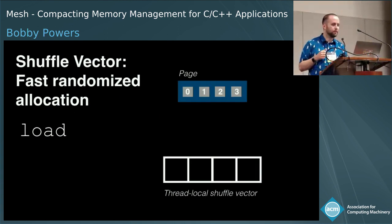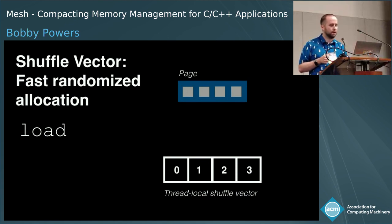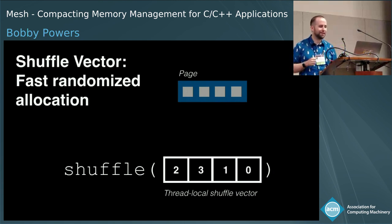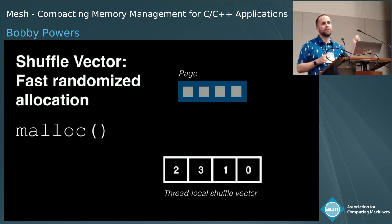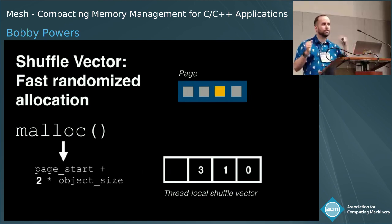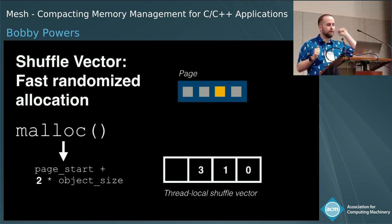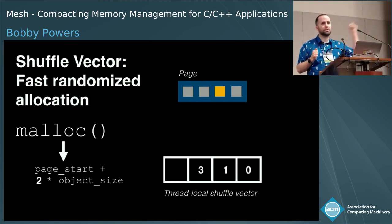The shuffle vector works by first loading the offsets from a page into a thread-local array. We then shuffle these offsets using the Fisher-Yates shuffle to get a random permutation. When an application calls malloc, we do bump-pointer style allocation — take the first free offset off the array, do some simple math to reconstruct a pointer, and hand that back to the application.